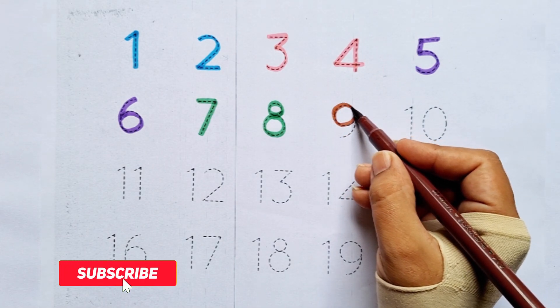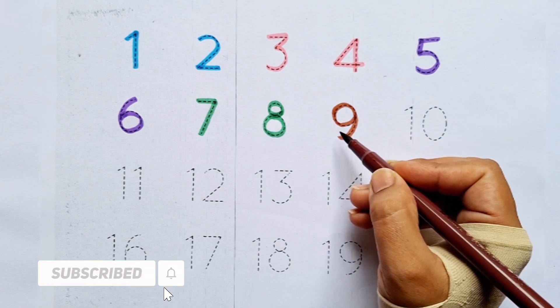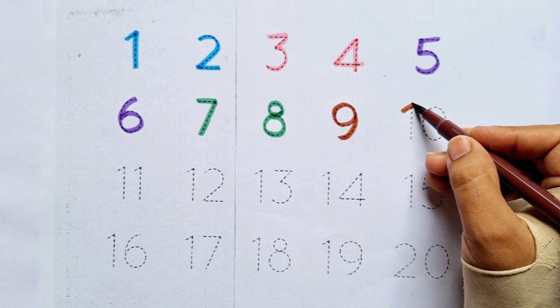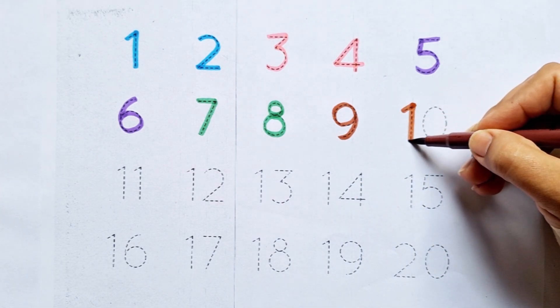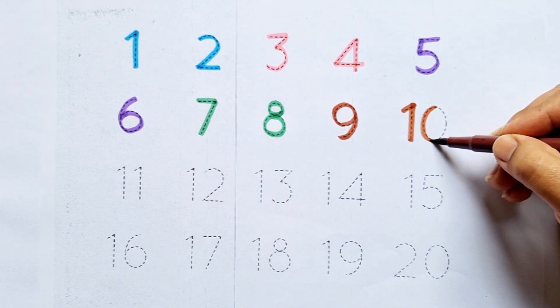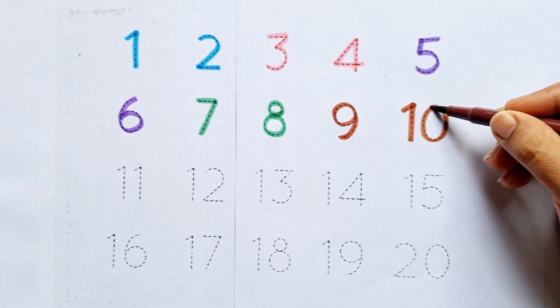After eight comes nine. Ten. This is ten: one, zero. Ten. After nine comes ten.